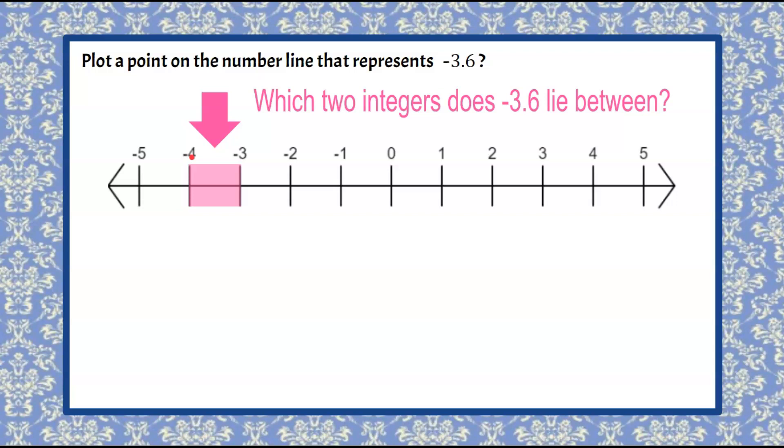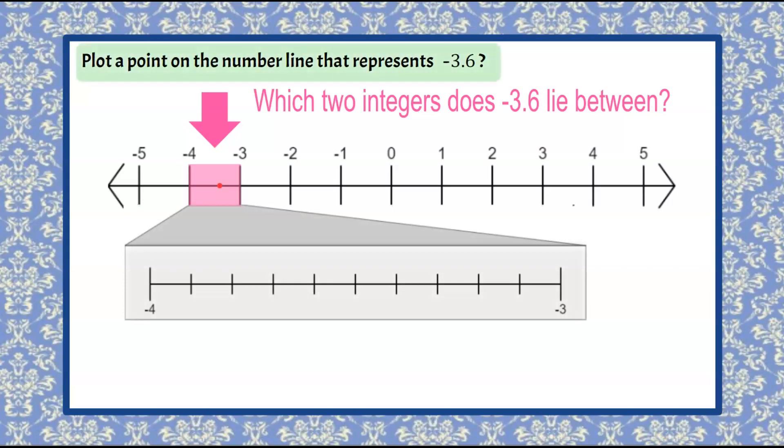So now if you were doing this computer-based question on the computer, once you clicked on this part of your graph, then it would open up a more detailed graph where we can see that we have negative 3, negative 3.1, negative 3.2, and so on.